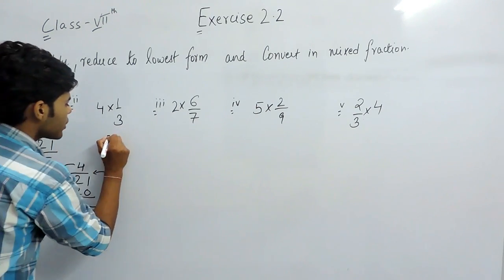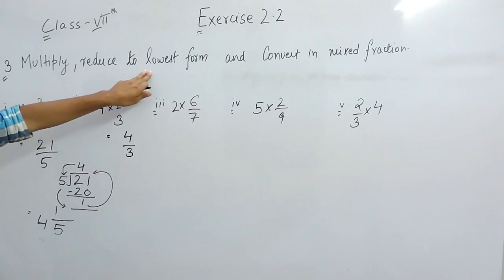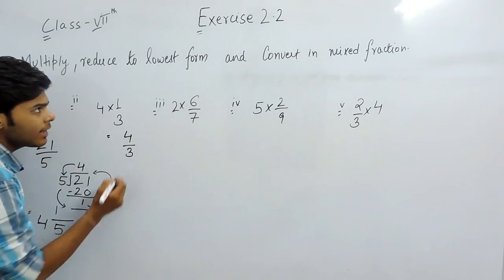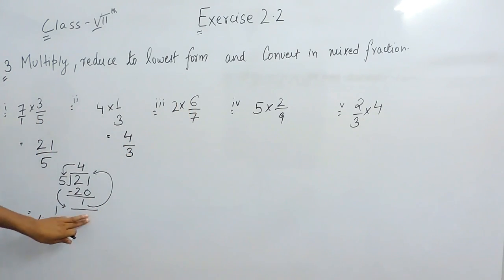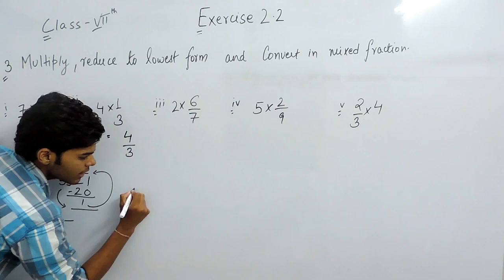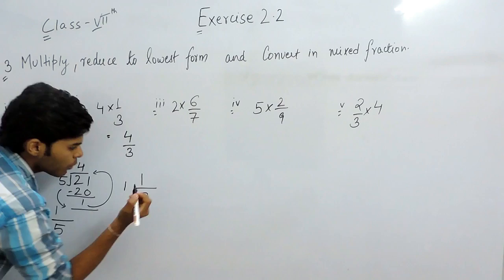So now we will move on to this question. This means we will multiply 4 upon 3. It cannot be reduced to its lowest form, so then we will write it in mixed fraction. Now you know how to write it in mixed fraction. I am writing the answer directly. There will be 3, 3 should be multiplied with 1 and then 1.